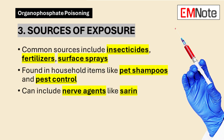Point number 3: Sources of Exposure. Exposure to organophosphates can occur through various sources, including insecticides and fertilizers, surface and room sprays, baits for cockroaches, shampoos against head lice, pet preparations, crop protection and livestock dipping, fumigation, and nerve agents such as sarin.